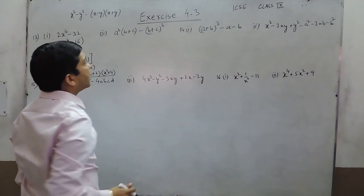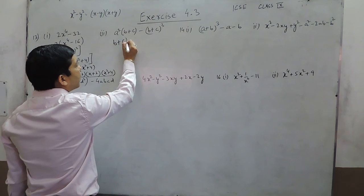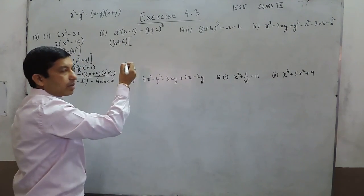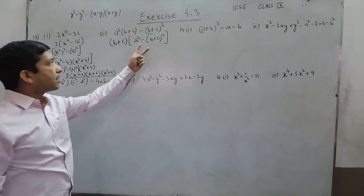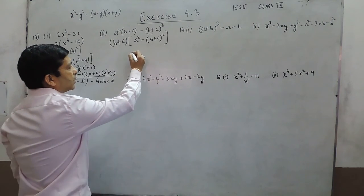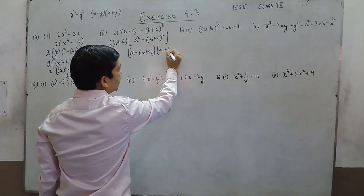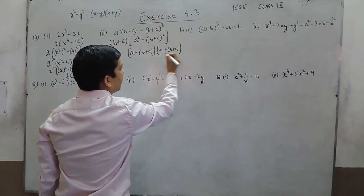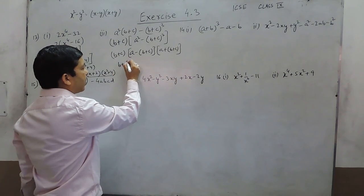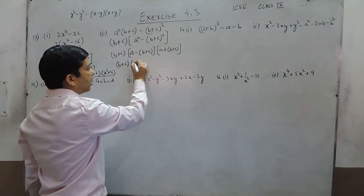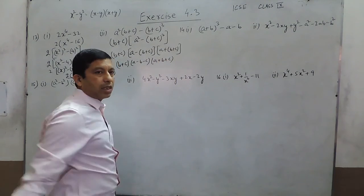Now we have to understand which value we can take commonly. In these two terms, b plus c can be taken as common term. It is a square minus b plus c whole square. Again the same identity goes in it: a minus b plus c in the first bracket and a plus b plus c in the second bracket, and b plus c was already one of the factors. So the total factors are b plus c, a minus b minus c, and a plus b plus c.